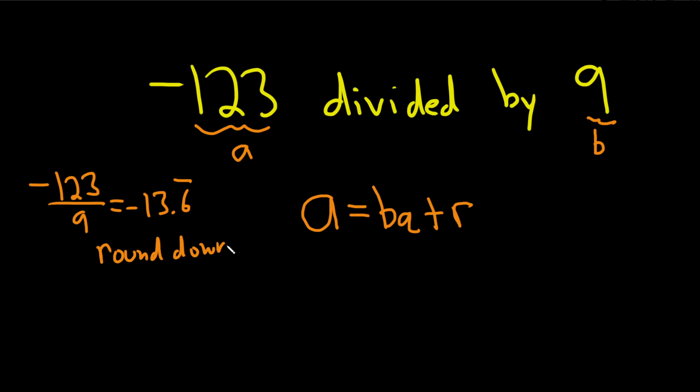you want to always round down. If you get a whole number, that's your quotient. But if you have a decimal part, round down. When you round down negative 13.6, the next whole number that's smaller is actually negative 14.